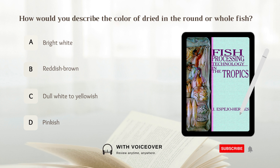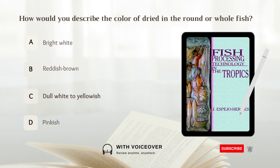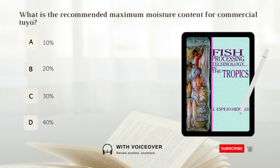How would you describe the color of dried in the round or whole fish? A. Bright white. B. Reddish brown. C. Dull white to yellowish. D. Pinkish. Answer: C. Dull white to yellowish. What is the recommended maximum moisture content for commercial toyo? A. 10 percent. B. 20 percent. C. 30 percent. D. 40 percent. Answer: D. 40 percent.